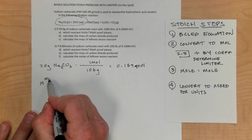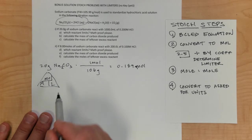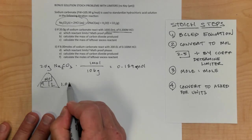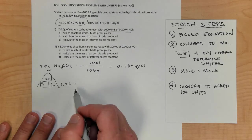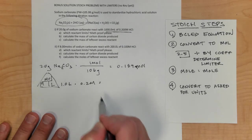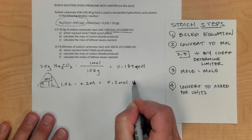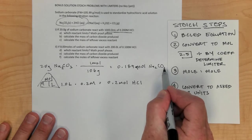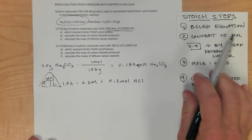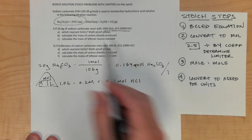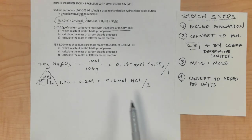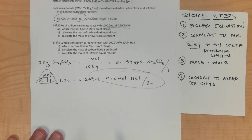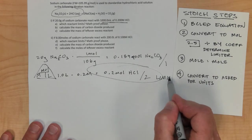For the other reactant, we need the molarity triangle since we're given a volume and a molarity. 1000 milliliters is 1 liter, so volume times molarity: 1 liter times 0.2 molar equals 0.2 moles of HCl. We have 0.189 moles of Na2CO3. To determine the limiter, divide by the coefficient: Na2CO3 divided by 1, HCl divided by 2. Since 0.2 divided by 2 is 0.1, which is smaller than 0.189, HCl limits this reaction.